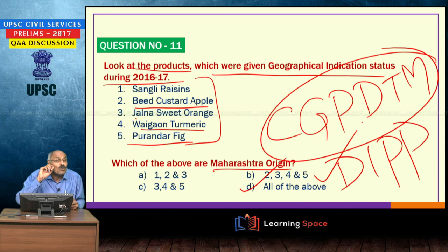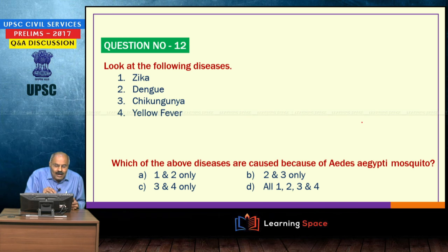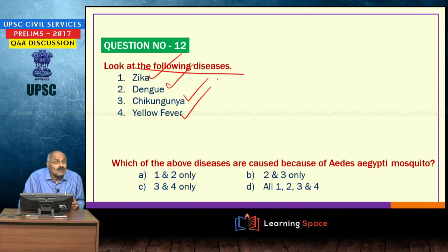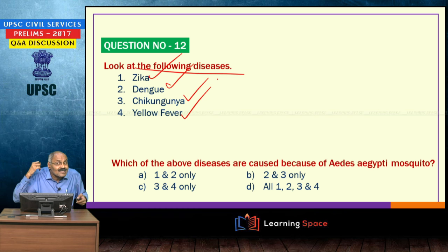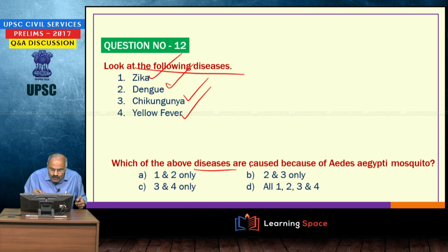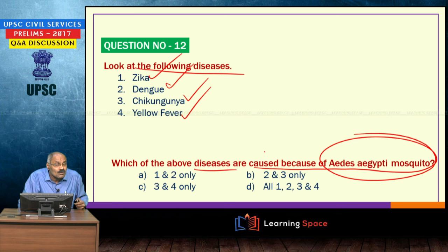Look at the following diseases: Zika, Dengue, Chikungunya, and Yellow Fever. All four are caused by the Aedes mosquito. Last week we discussed various vaccines pertaining to Malaria, Zika, and Ebola.